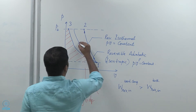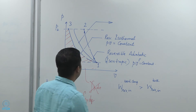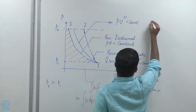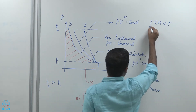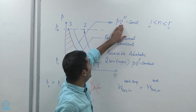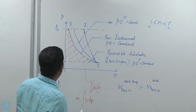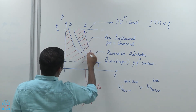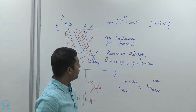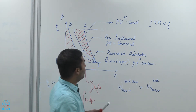This intermediate process in general cannot be described by a simple equation because it is particular to the device. But in general it can be thought of as pv^n = constant, where n is a number between 1 and gamma. So 1 is for isothermal, gamma is for adiabatic, and n between 1 and gamma represents this intermediate process. By doing this we end up saving some of the work input — this process is called a polytropic process.